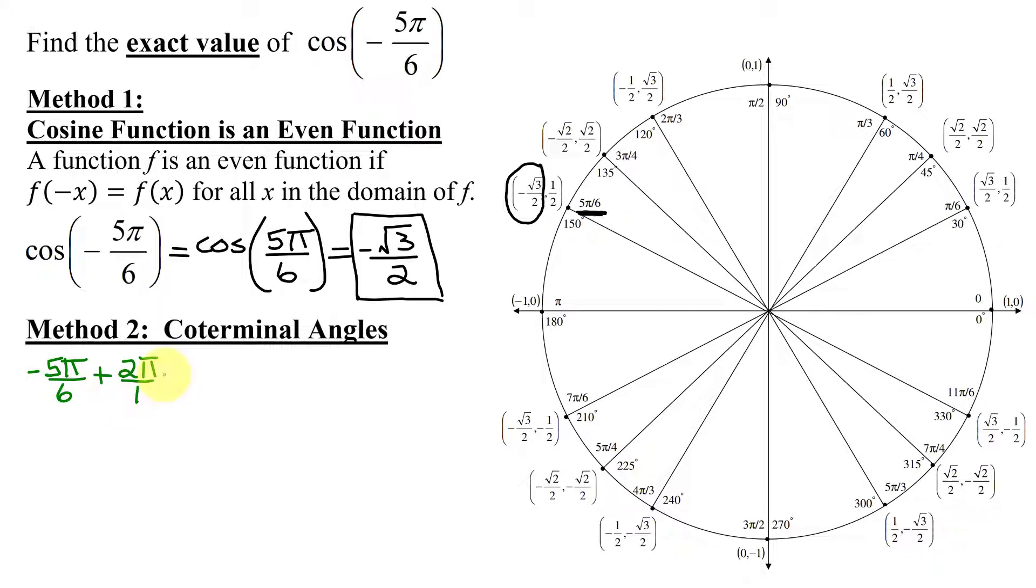Turn it into a fraction by dividing it by 1. I need a common denominator, so multiply by 6 over 6. And I get negative 5π divided by 6 plus 2 times 6 is 12π, divided by 6, negative 5 plus 12 is positive 7π over 6.